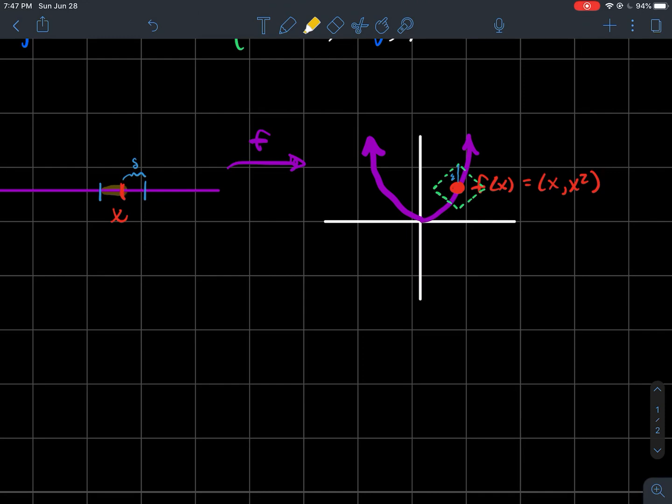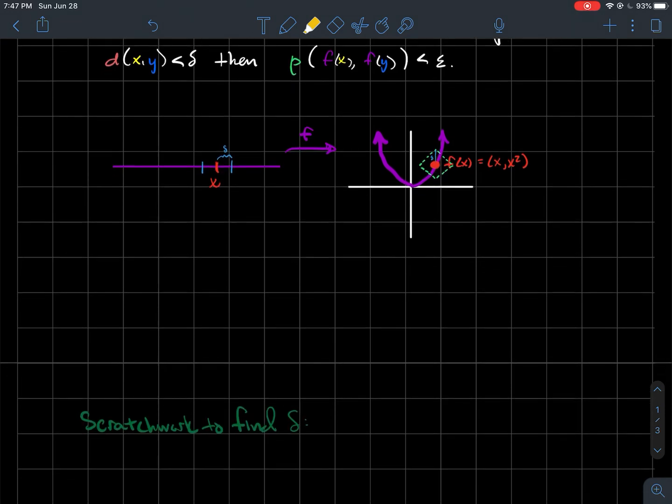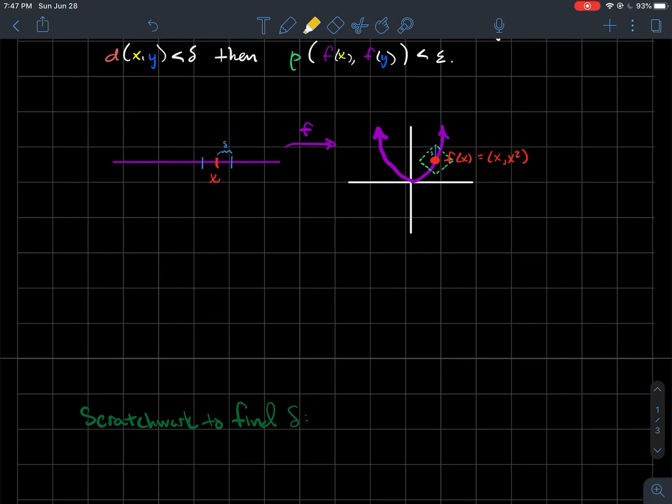So that every single point inside of here, when you plug it into f, should land inside of this window over here in the range. So we need to be able to find a delta that can depend on epsilon and it can depend on x, but nothing else. So how do we actually go about doing it? Again, that's the idea, to show its continuity. It should seem fairly similar to what you might have done in calculus or a real analysis class.